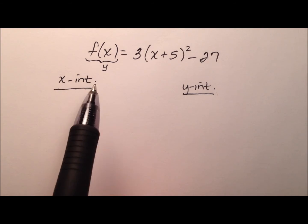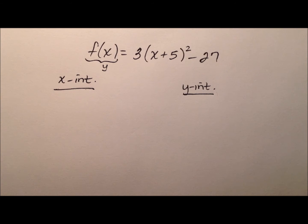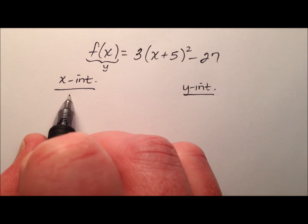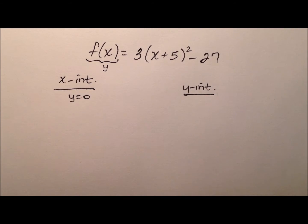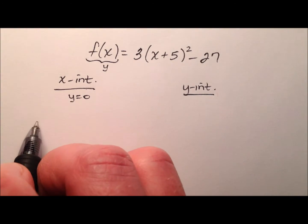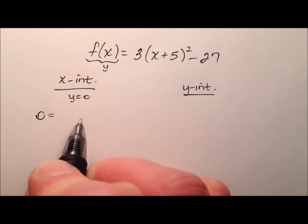Remember there are either 0, 1, or 2 x-intercepts for these quadratic functions, and so we can find it algebraically by plugging in 0 for y and then solving. Alright, so if this f(x) is our y, let's go ahead and start by plugging 0 in for it.